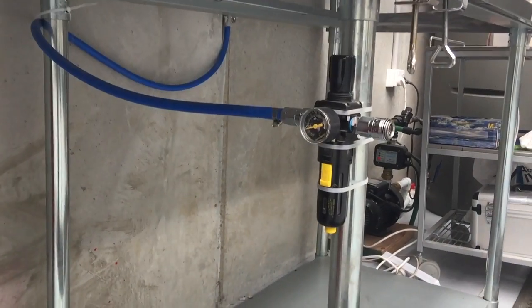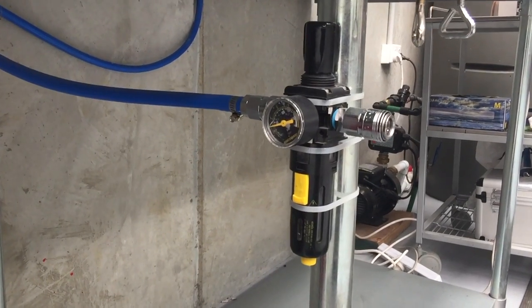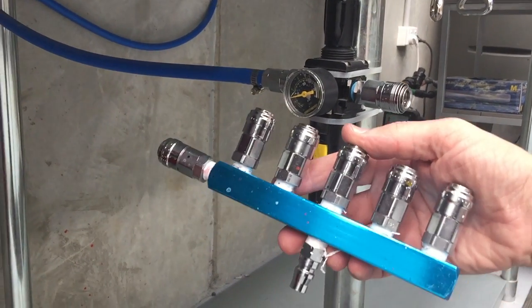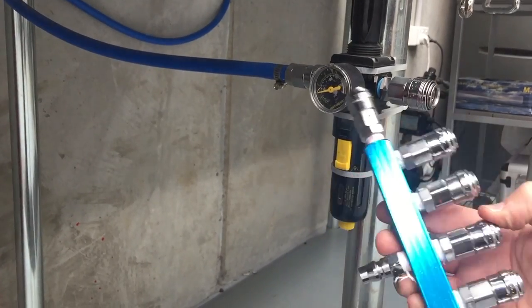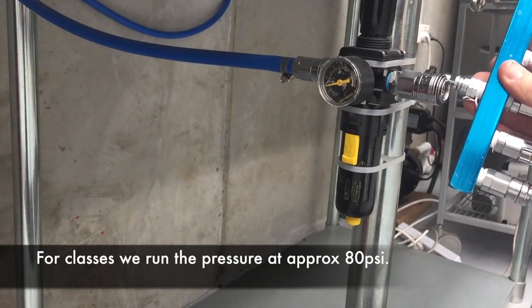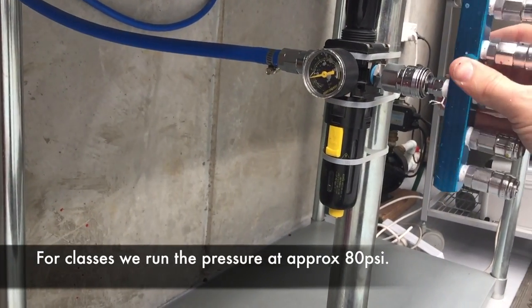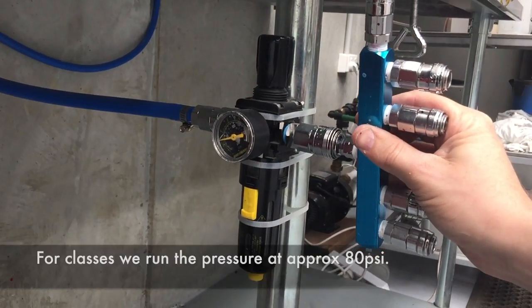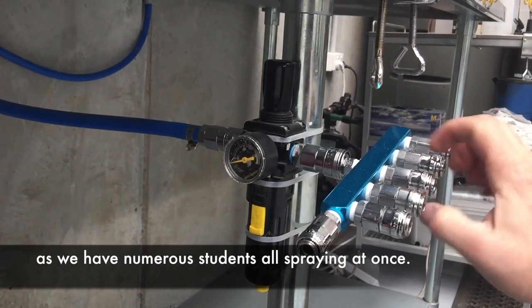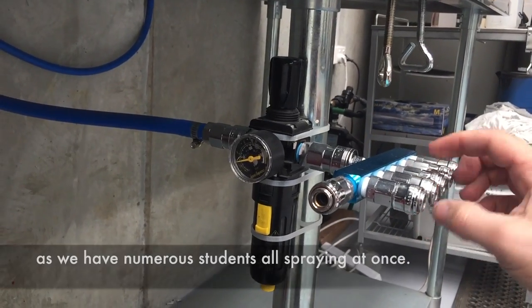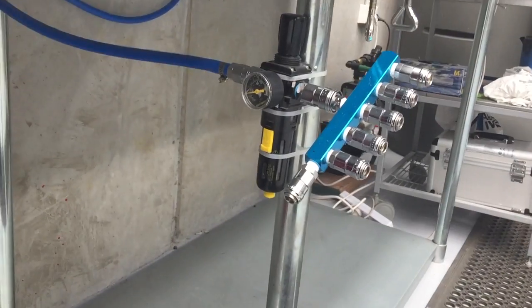Then this is the other connection on our double bench. And there's the manifold. So you can see we've got six ports available there. And then this part clicks into our moisture trap and regulator. You can see I've just got that cable tied. When we do courses we need to move things around so that's why this one's not a permanent fixture.